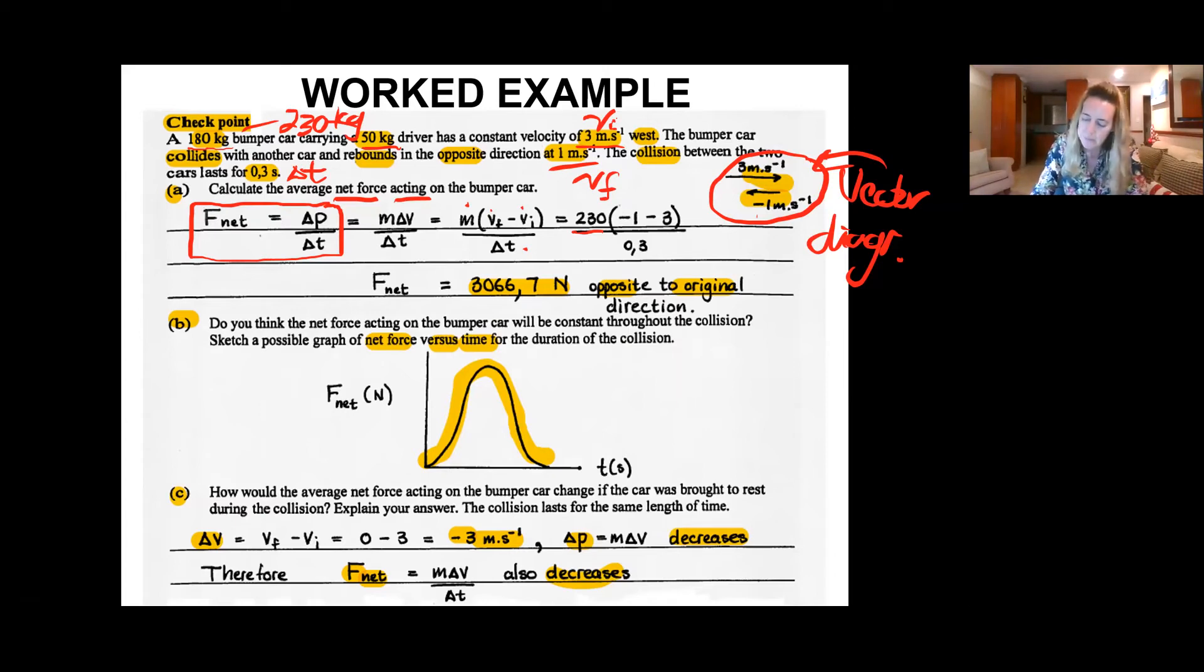So we subtract the original direction speed of positive three meters per second. So clearly we choose to the right as the positive direction. Just make a note of that when you start your problem. Choose the direction to be positive. So if something moves in the opposite direction to that, you will denote a negative sign in front of that value.